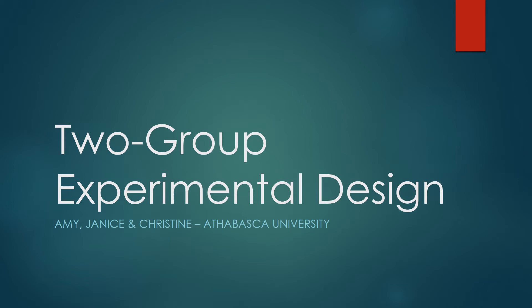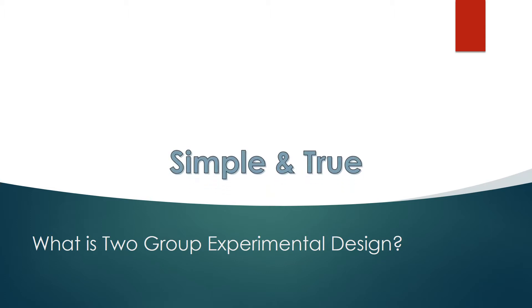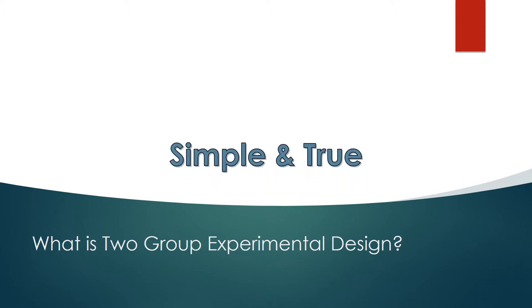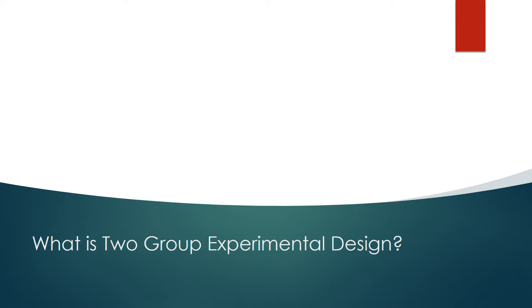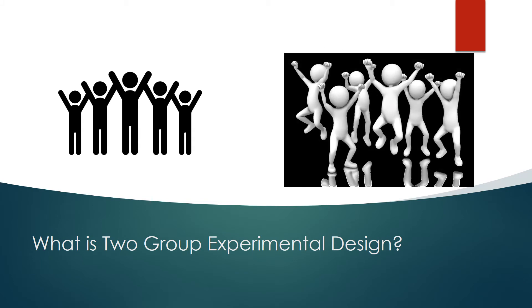A look at Two-Group Experimental Design by Amy, Janice and Christine. So what is Two-Group Experimental Design? It's a simple and true experimental design that tests the effects of a variable on two different groups: a control group and a treatment group.